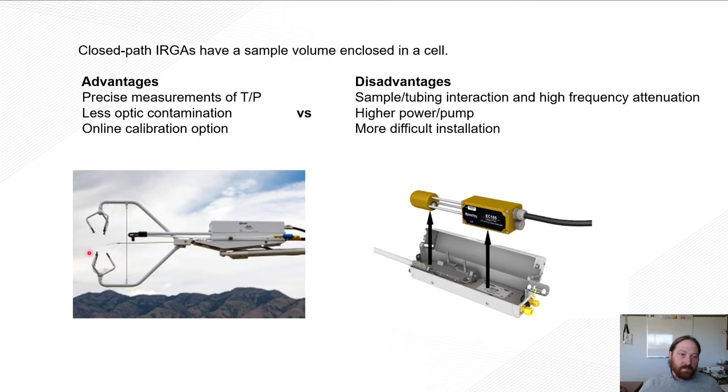So some advantages of this is that we have precise measurements of both temperature and pressure in this cell. So we can account for those things that the Webb-Pearman-Leuning is correcting for in the open path design by precisely measuring temperature and pressure and working in a conserved quantity like mixing ratio.